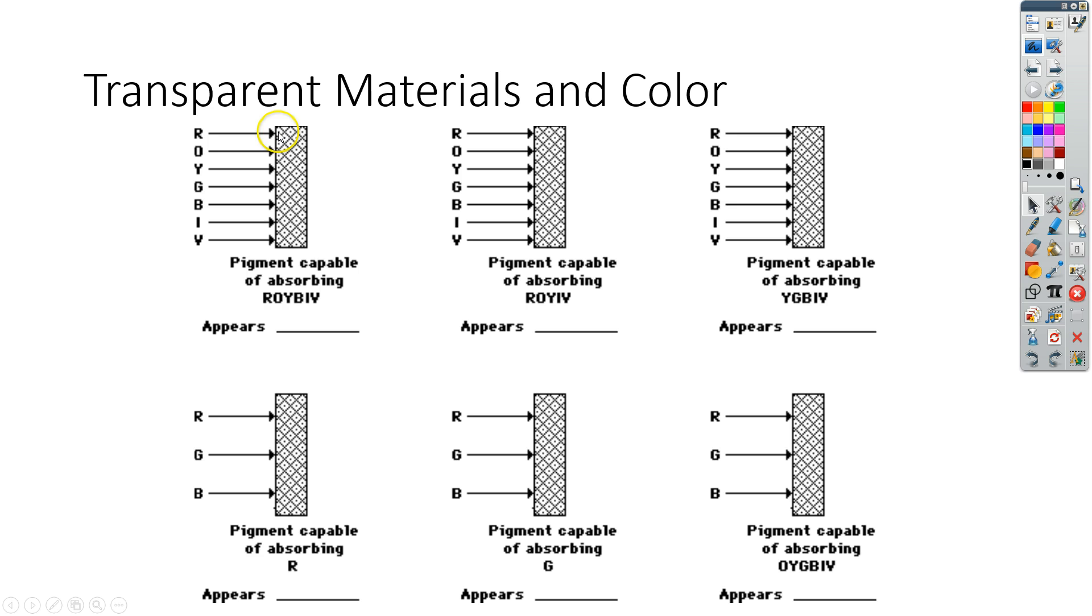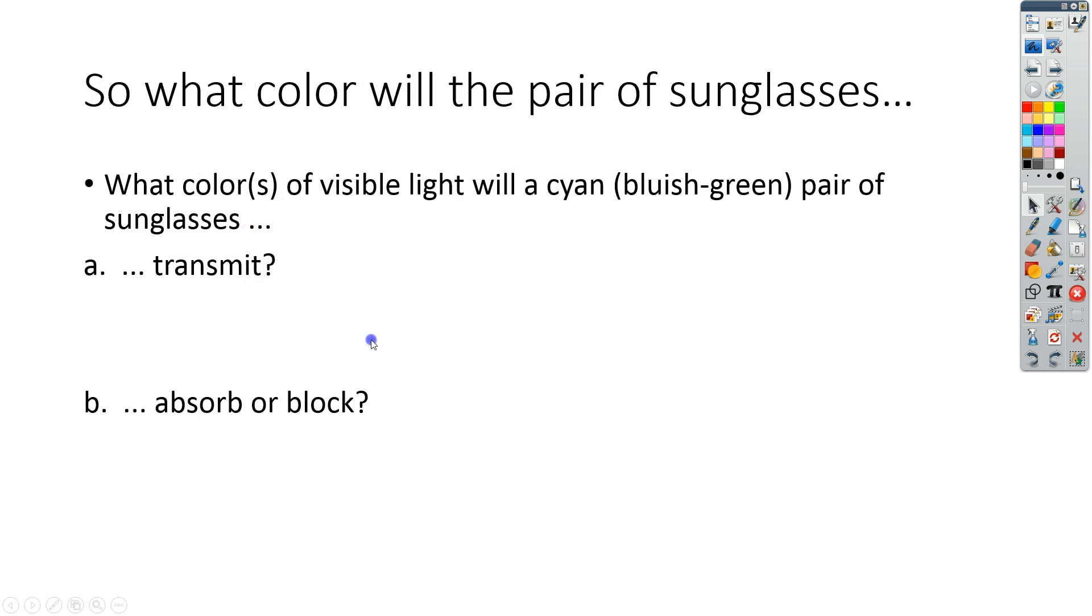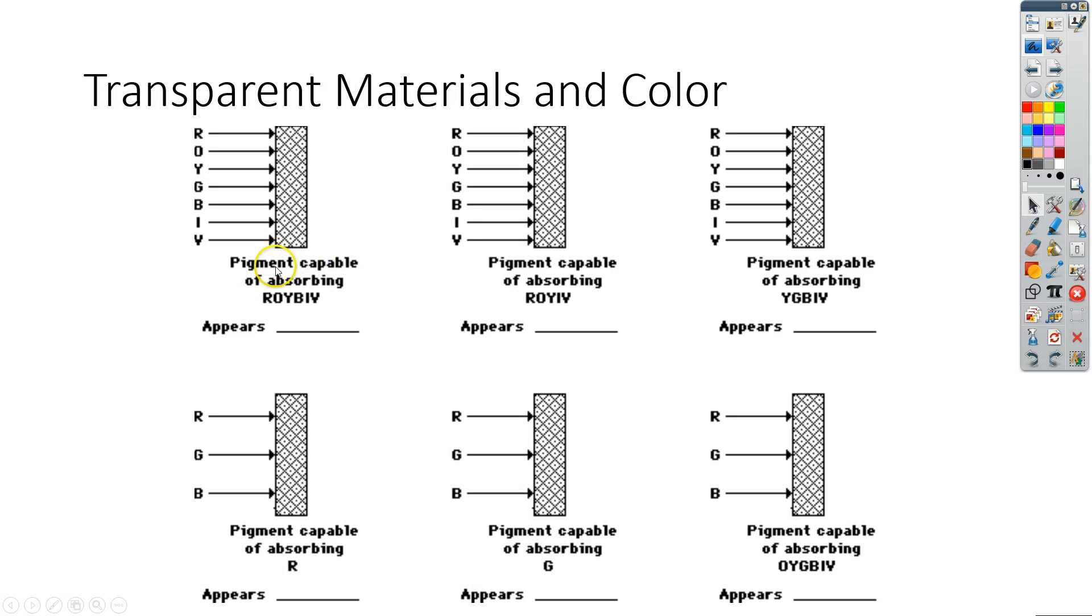Transparent materials, this would be like a film that's colored red or green or blue or whatever it is. Sometimes you'll see windows that are stained glass. I think that's probably the easiest way of thinking about it.